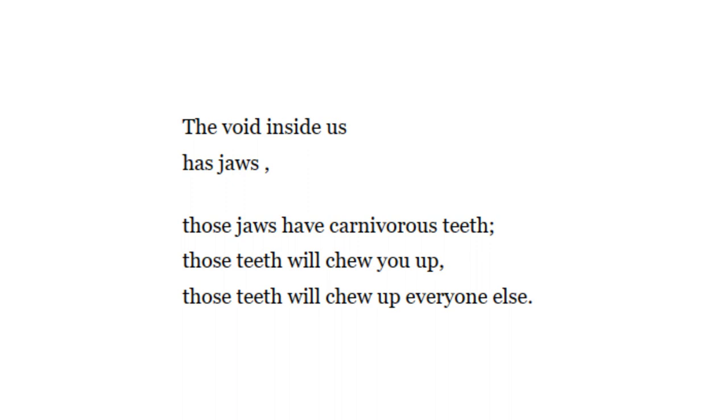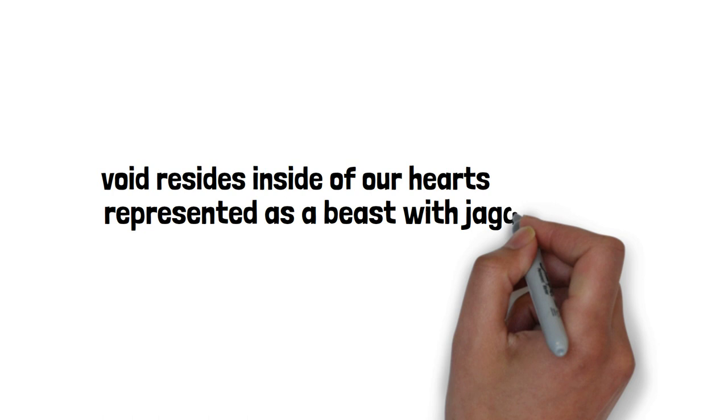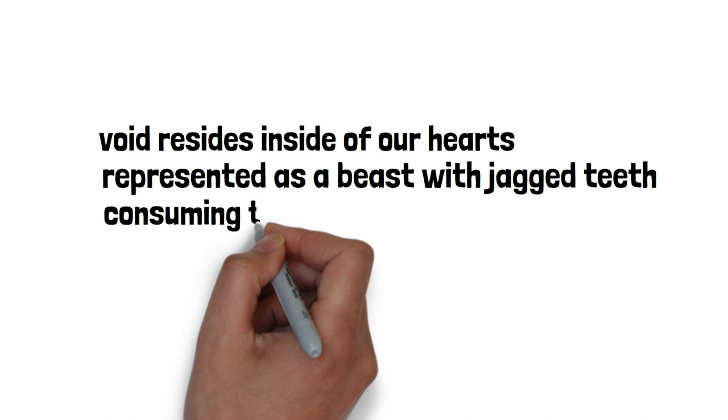According to Muktibodh, the void that resides inside of our hearts is represented as a beast with jagged teeth. The void has carnivorous teeth, the poet claims. A carnivore is an animal that consumes other animals for food. That is also how void is.